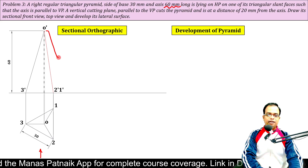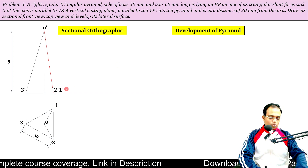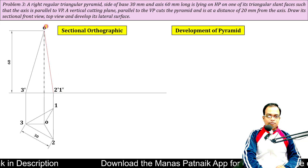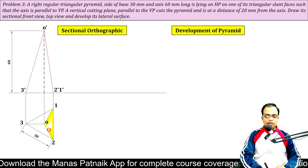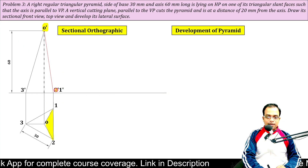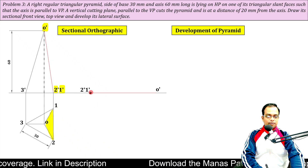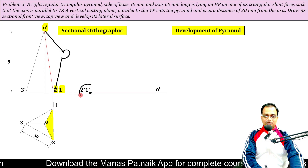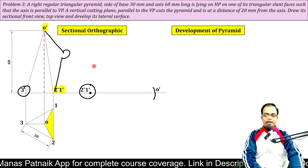In step number two, what looks like a line is actually a triangular face — O-1-2 as you can see. This triangular slant face has to be kept in contact with the horizontal plane. Create point 2'-1' here, then with O'-2' as the radius and that point as center, cut an arc to get point O'. In the same fashion, point 3' can be located by intersection of two arcs.